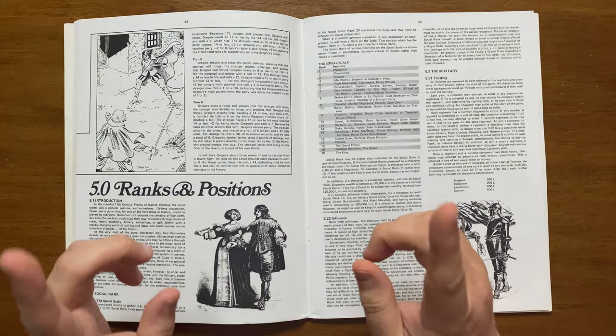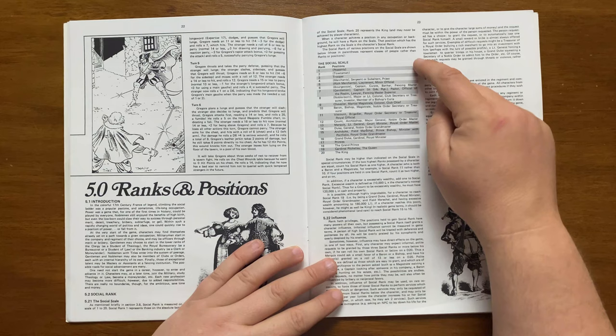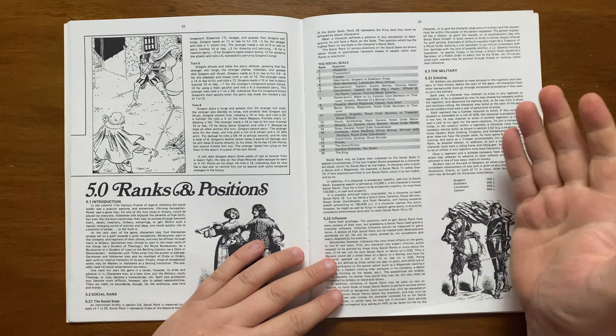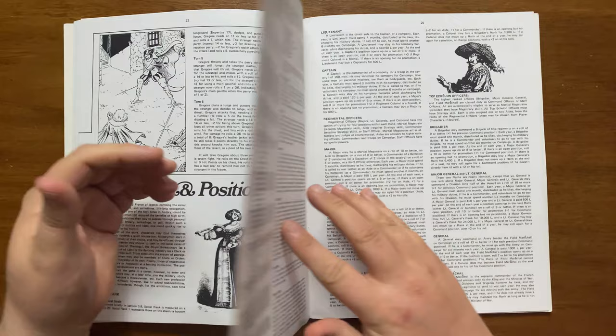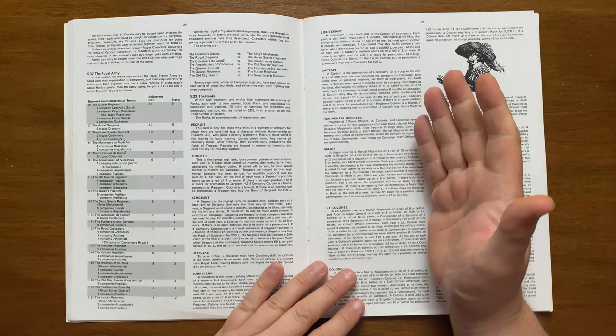The next section goes on to talk about the different ranks and positions. In 17th century France, social status was incredibly important and it gives us the social scale in this table, ranging from peasants at the bottom to the king at the top. It goes into the influence of rank and the game mechanics that go alongside it and then moves onto the military. It gives the mechanics for enlisting and explains the requirements for those with very high wit, endurance, charm or luck and how they can advance very quickly in rank. The pay scale for each starting rank is listed here.